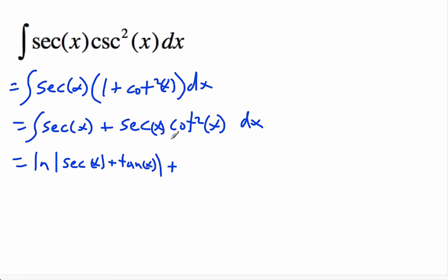For this integral, we're going to write this as 1 over cosine x and cotangent as cosine squared x over sine squared x.